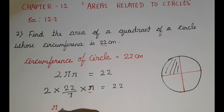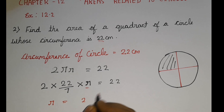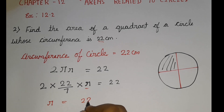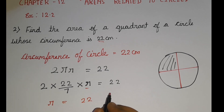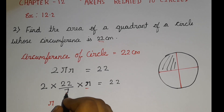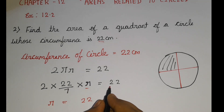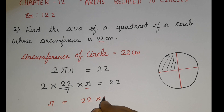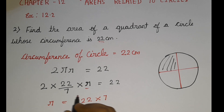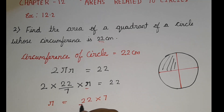So let us write r = 22. And here it is divided by 7, so when it comes to this side, it changes into multiplication — because here it is divided by 7.